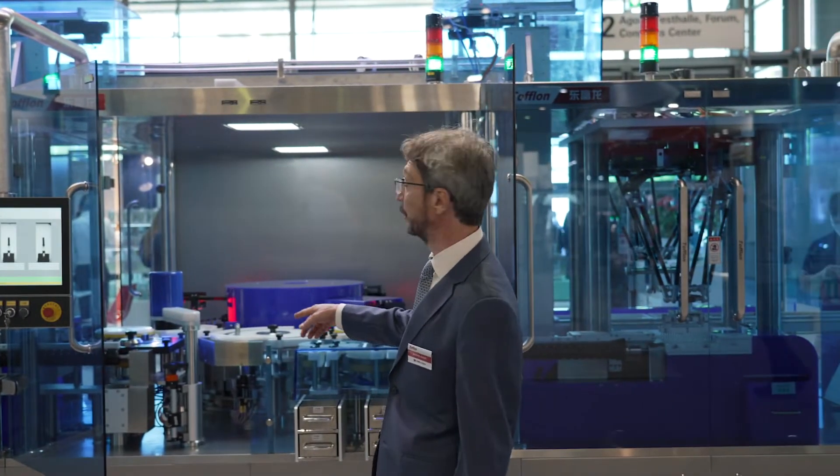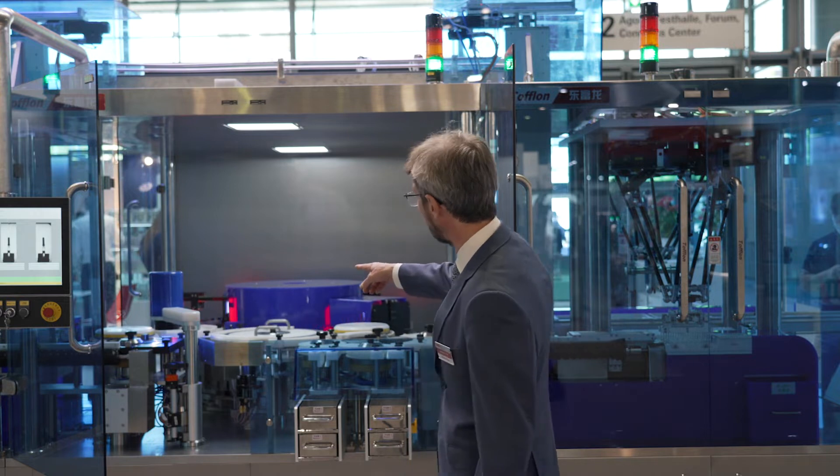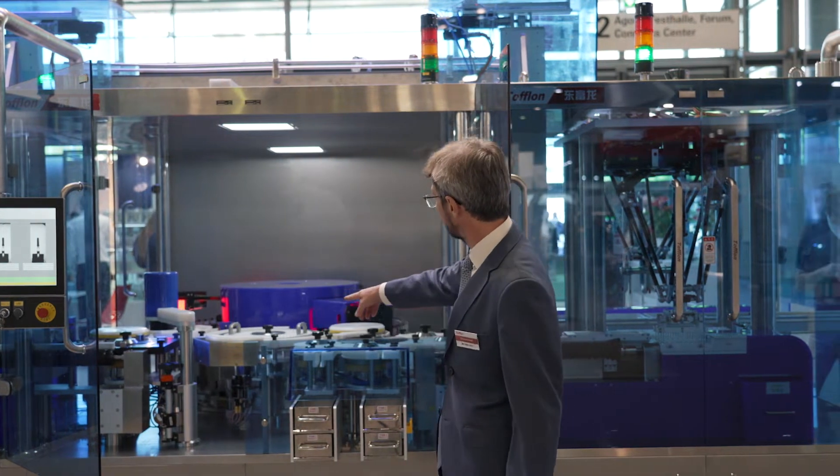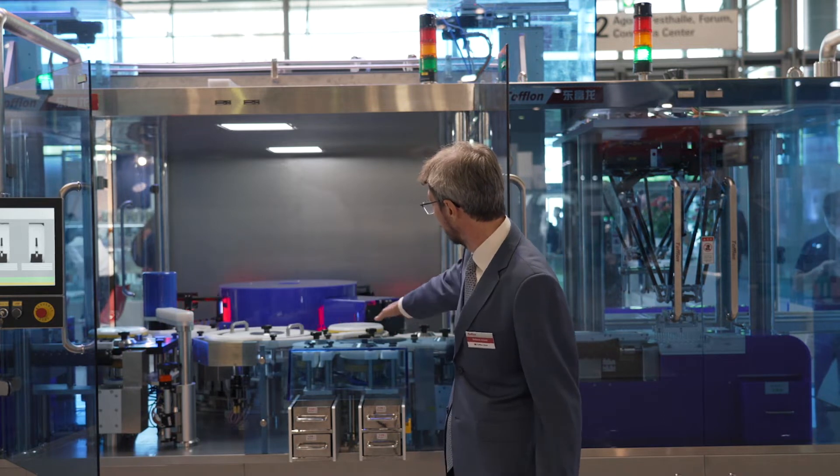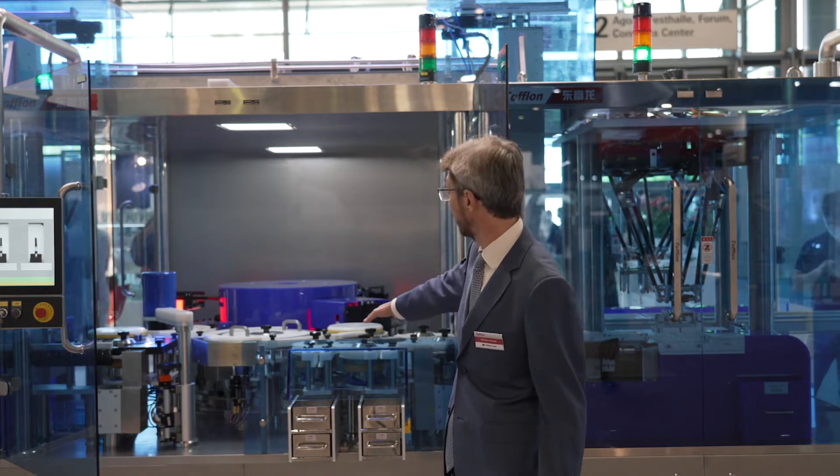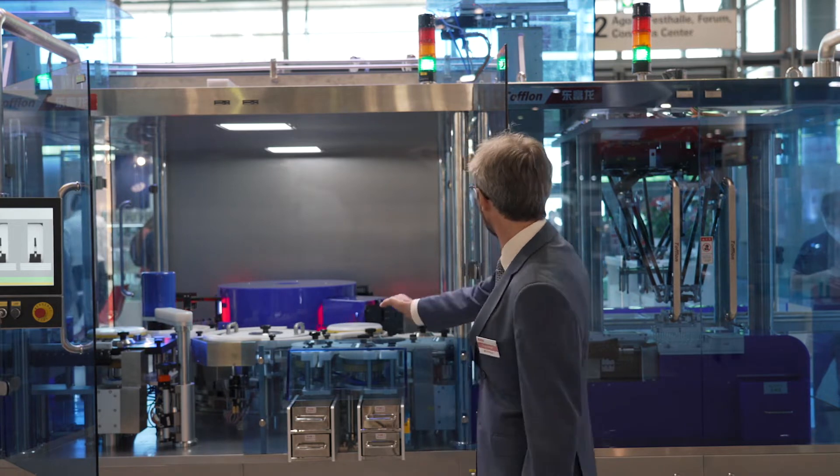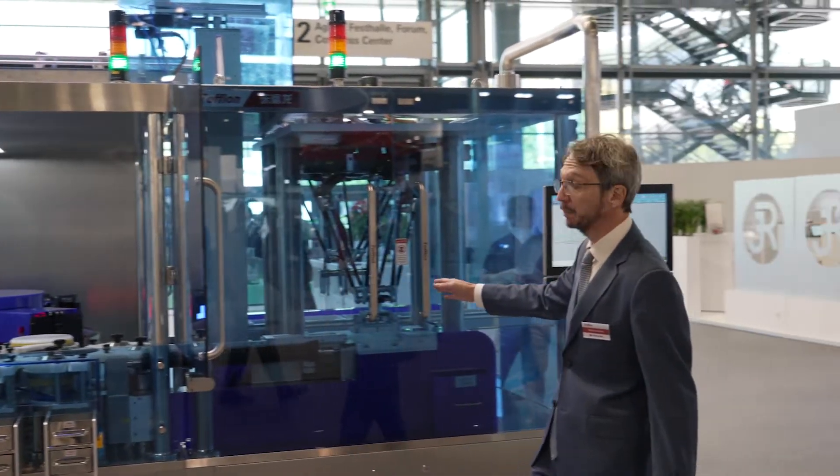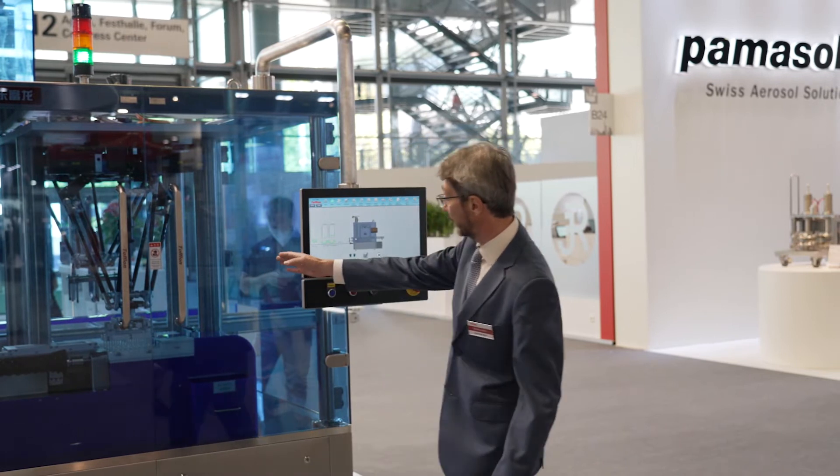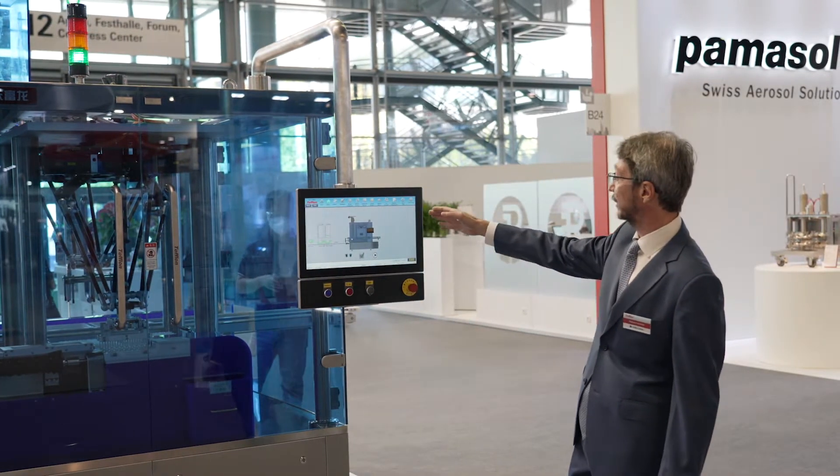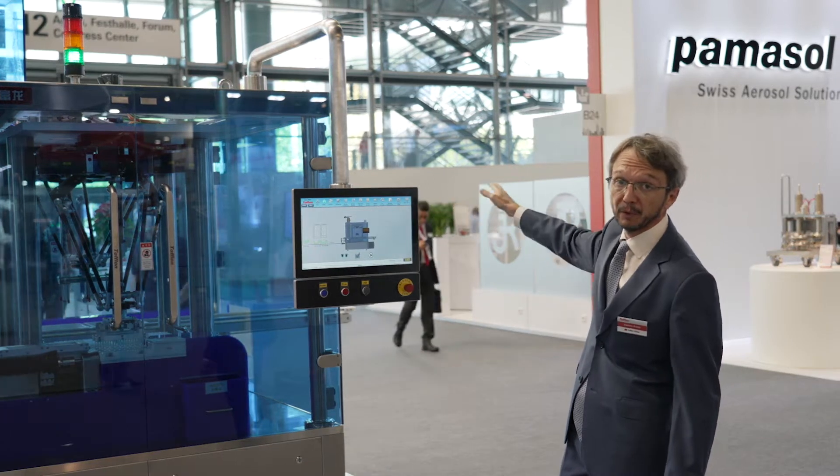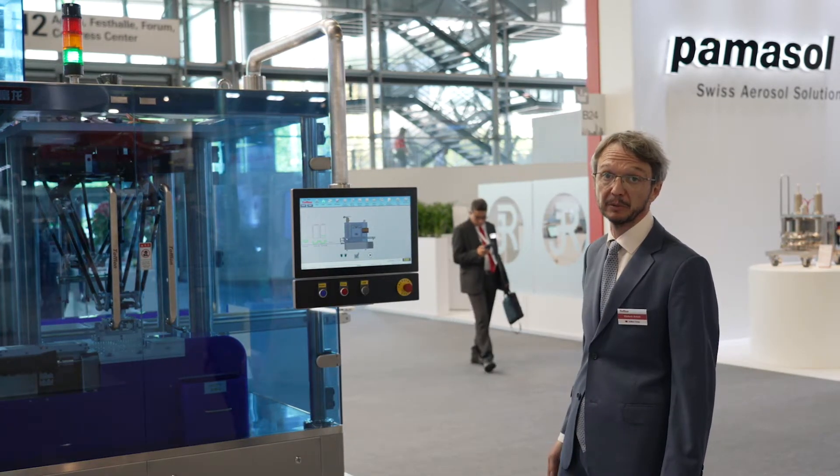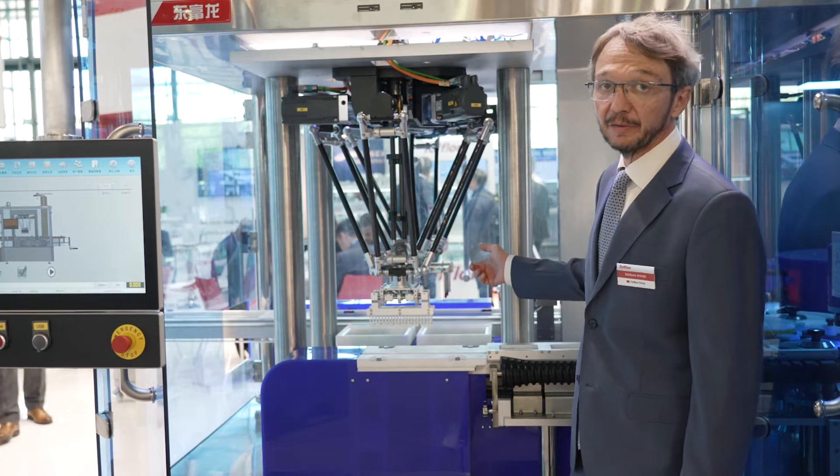After inspection the syringes come to the sorting area where they are separated, the bad containers are separated from the good ones. Finally we have the output area and the re-nesting area where the good syringes are put again in the nest for the next step of manufacturing.